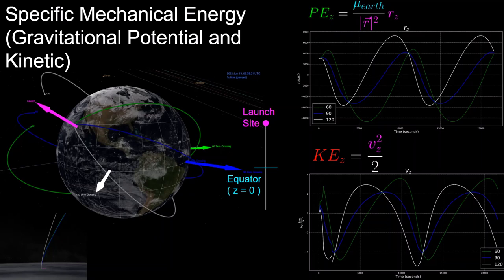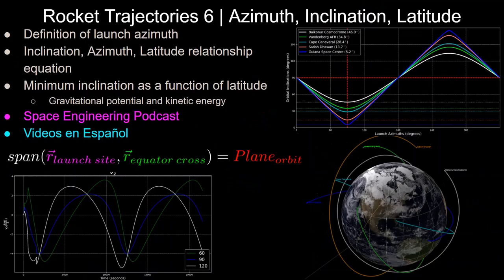First, using the linear algebra concept that two three-dimensional vectors span a two-dimensional plane, and second with gravitational potential and kinetic energy. This is the sixth video in this rocket trajectory series, and if you haven't seen it already on this channel, I also have over 60 videos on orbital mechanics with Python, the space engineering podcast, and videos in Spanish.